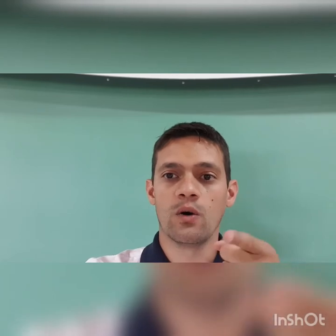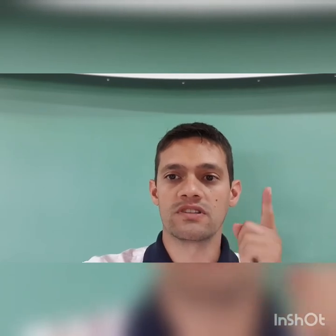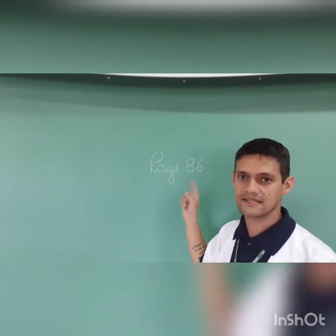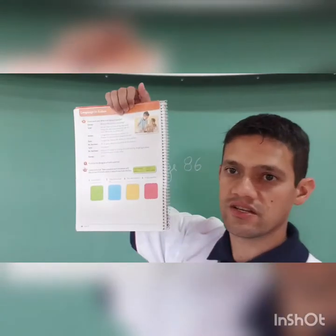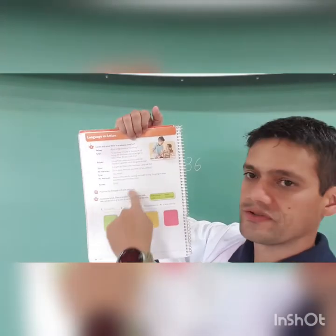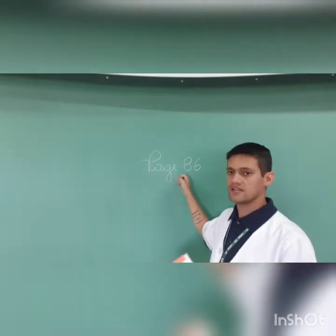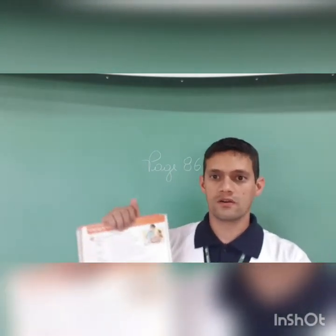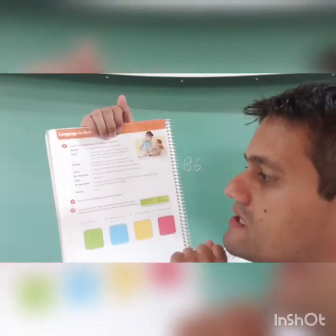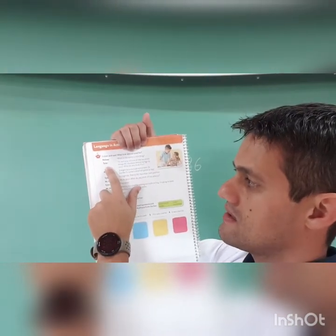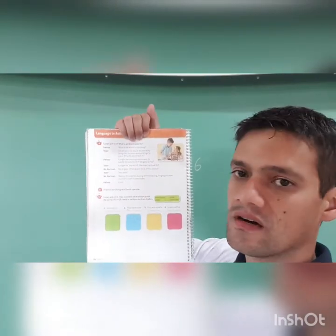Go there and open your books for me, please. Students, I need you to open your books to page number 86. So we are going to do this part over here. We have a conversation on page 86. There we have Kelsey, Tyler, and Mr. Hartman.